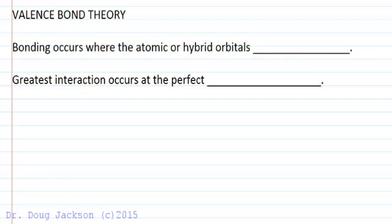Bonding occurs according to valence bond theory where atomic or hybrid orbitals overlap. We've talked about s and p orbitals, d orbitals, hybrid orbitals — sp, sp2, sp3 — and the greatest interaction occurs at the perfect bond length.